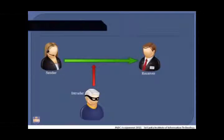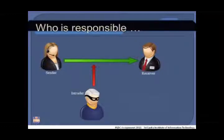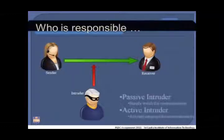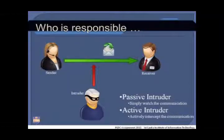The diagram explains how your information privacy is violated by an intruder. There are two types of intruders: passive and active. A passive intruder simply watches the communication, whereas an active intruder actively intercepts the communication.